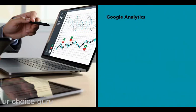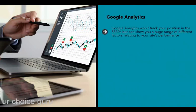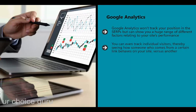Google Analytics won't track your position in the SERPs but can show you a huge range of different factors relating to your site's performance, including CTR, bounce rates, and more. You can view this information as trends over time or on a per-day basis, and you can even track individual visitors - seeing how someone who comes from a certain link behaves on your site versus another. This would in theory allow you to create lots of different split tests on the fly, simply by dividing your data into categories and comparing.